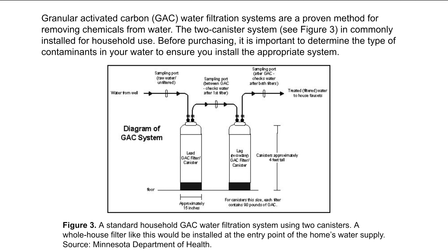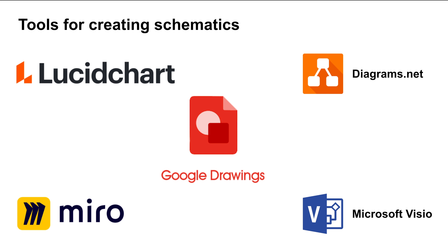Be sure to number the figures by the order in which they appear. If you obtain the image from elsewhere, you should cite the source for a schematic just like you would for a written source. Many software options exist to help you with schematic design. Several options are shown on the screen, including Lucidchart, Diagrams.net, Google Drawings, Miro, and Microsoft Visio. We've provided links to these options in the description box below.